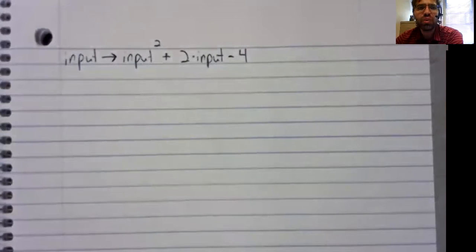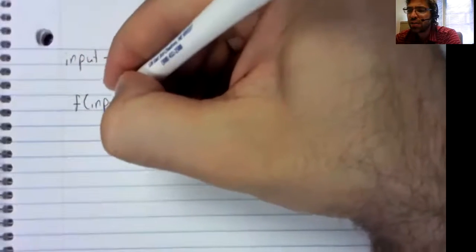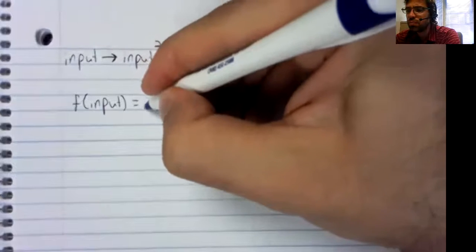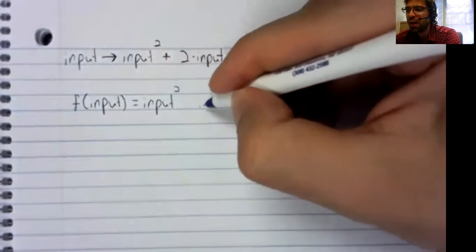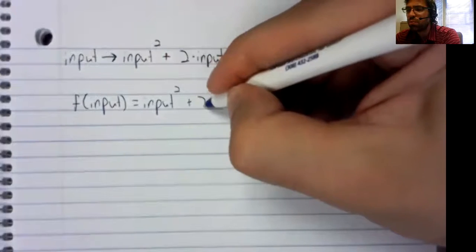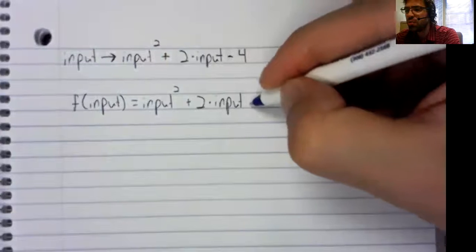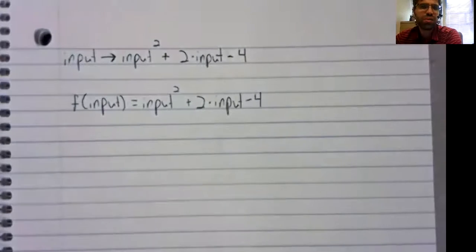A function that does something like this. If we call this function f, we could write f of input equals input squared plus two times input minus four.